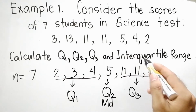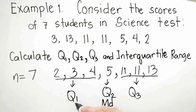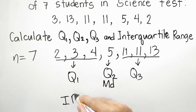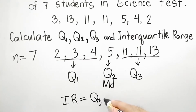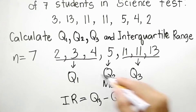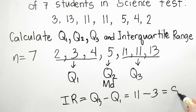Now for the interquartile range, we subtract to find the difference between Q3 and Q1. IQR = Q3 minus Q1 = 11 minus 3 = 8.